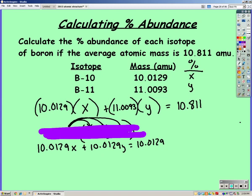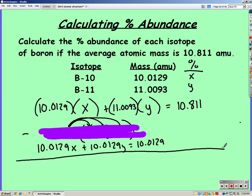Now I have my two equations and I can just subtract them. So 10.0129x minus 10.0129x is just 0 plus 11.0093y minus 10.0129y gives you 0.9964y. And finally we have to subtract the last one, which is 10.811 minus 10.0129, which is 0.7981.